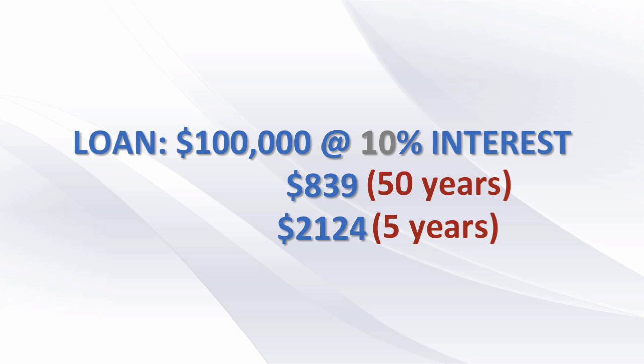10% seems like a lot of interest right now, but in the programming world 10% is really, really low. To get 10% return on using a method or a piece of software means you have a method that's called twice, or two users that are using your software.